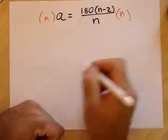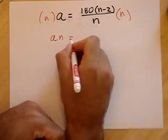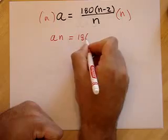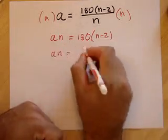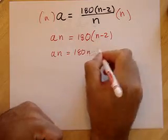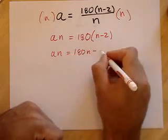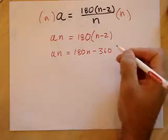And we get over here, An equals 180 times n minus 2. Watch how nice this is. An equals 180n, I'm going to distribute that 180, minus 2 times 180, 360. Now,